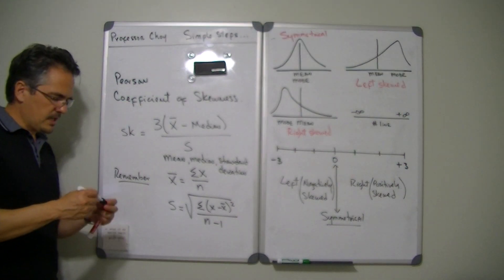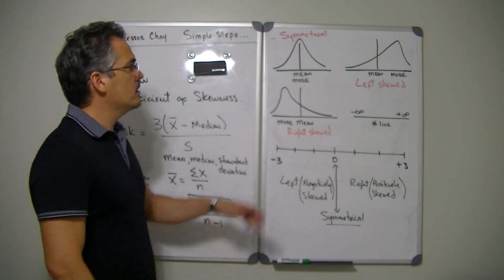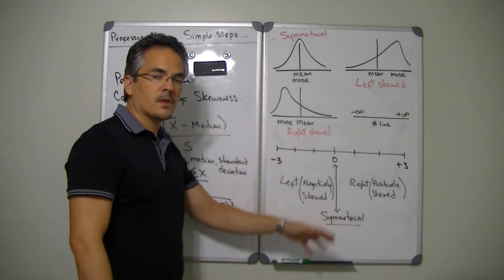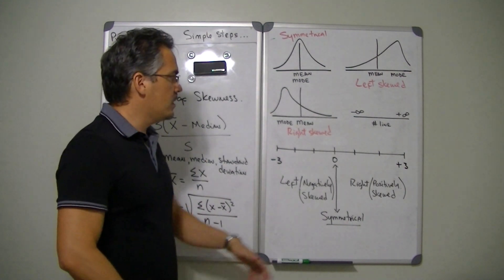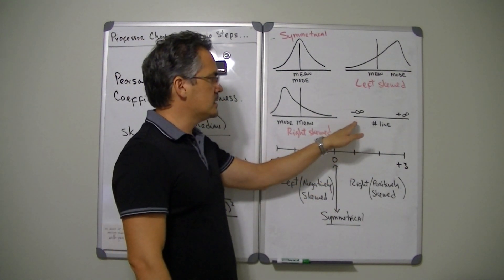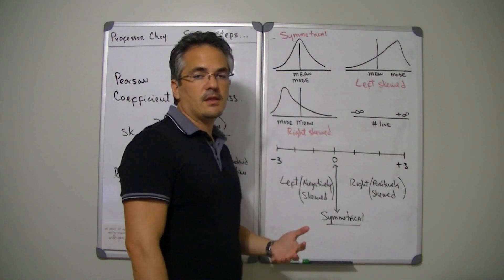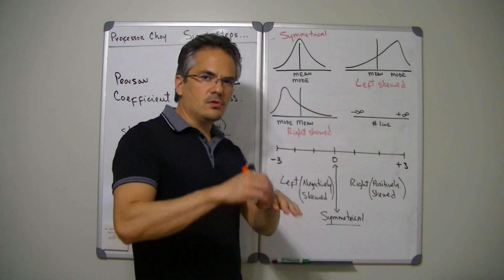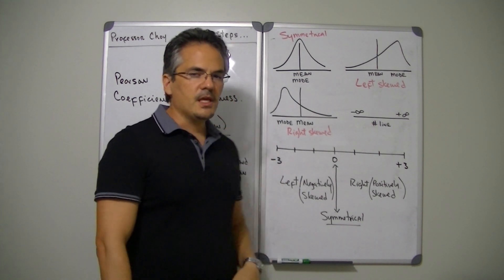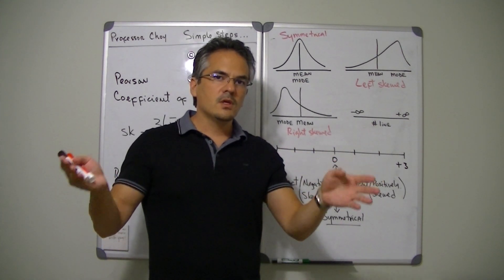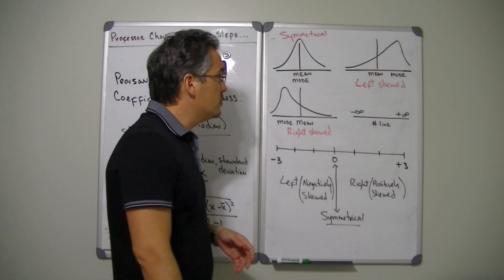Now, before I get into a quick calculation, let's talk about what we use the Pearson coefficient of skewness for. Every time you put data on a number line from smallest to largest, one of the things that starts popping out — if you think about the frequency of how many numbers are repeated — is the distribution of the data. Data has three basic types of distributions.